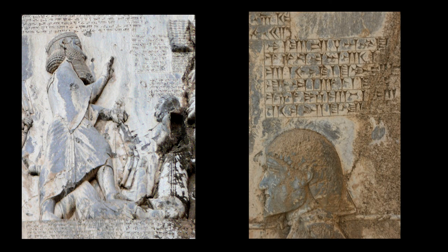Sections 72–73: "King Darius says: Those Elamites were faithless and Ahura Mazda was not worshipped by them. I worshipped Ahura Mazda; by the grace of Ahura Mazda I did unto them according to my will. Whoso shall worship Ahura Mazda, divine blessing will be upon him, both while living and when dead."